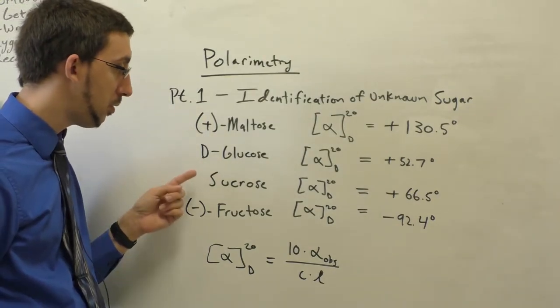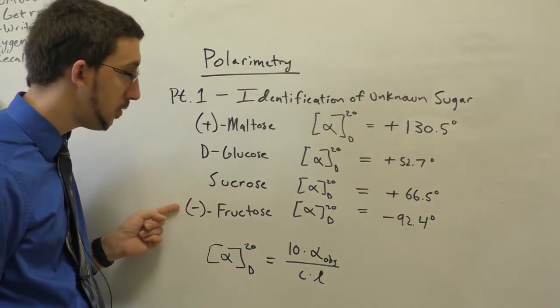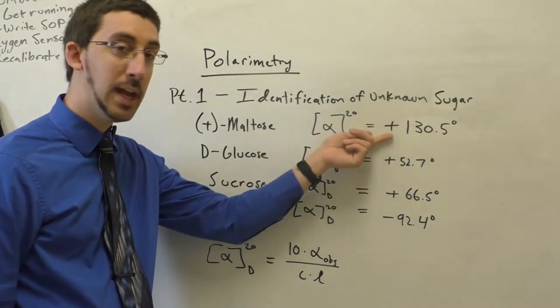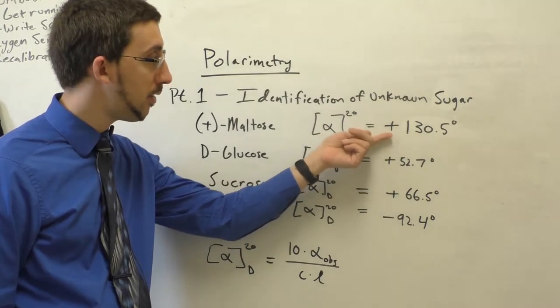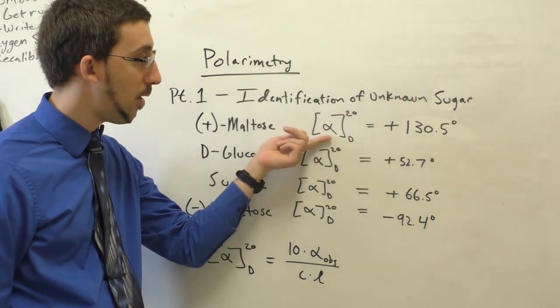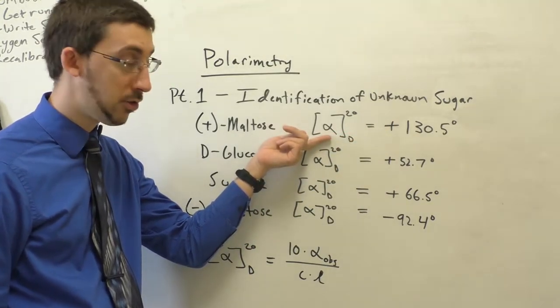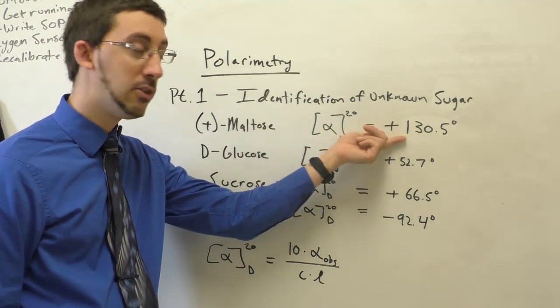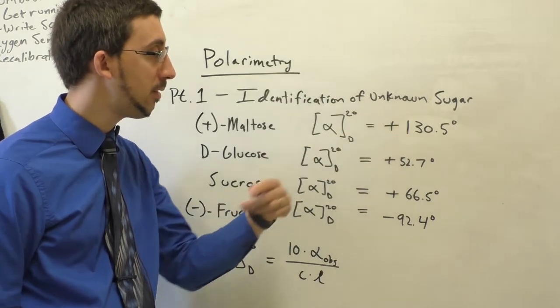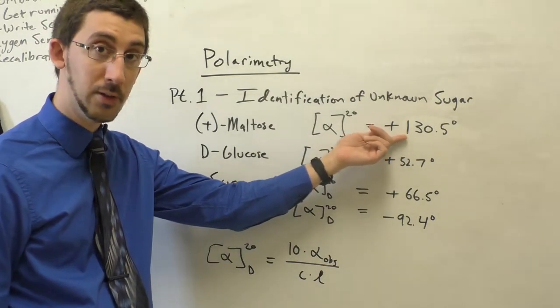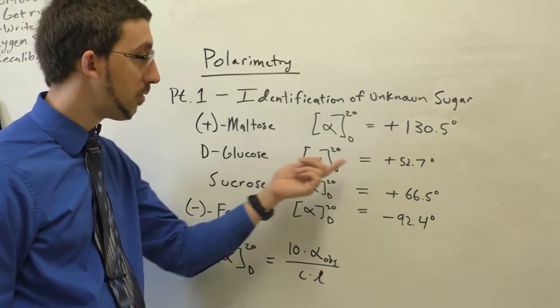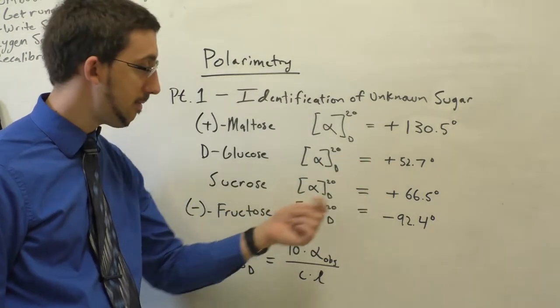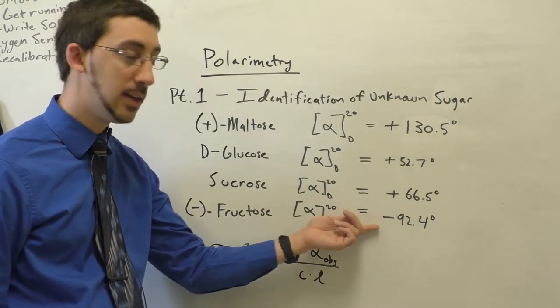So maltose, glucose, sucrose, or fructose. And you'll notice that each of them has a very different rotation value here in degrees. Now it's given the term alpha in brackets. Maltose has a specific rotation of 130.5 degrees, glucose is about 53, sucrose is about 66 and a half, and fructose is negative 92.